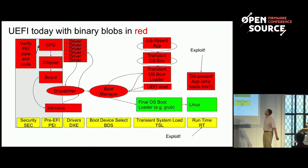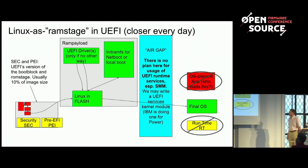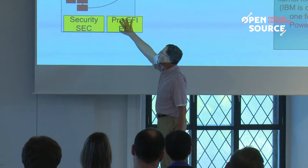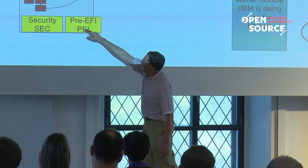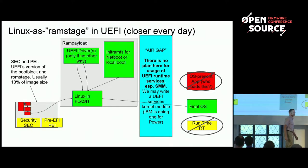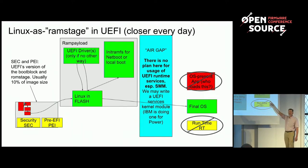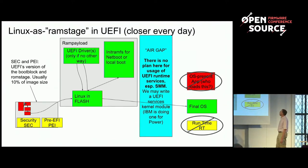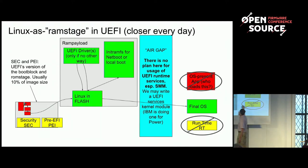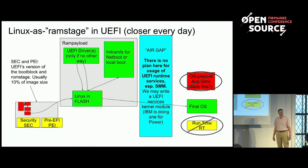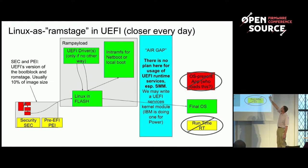The OS present app — what does that do? I don't know. There's just a lot of red stuff for me — blood red. This is what we're working toward. If we look at the SEC and PEI footprint in ROM, it's about 10%, and what we want to do is go right from that last step — the board init — right into Linux in flash, with an initramfs containing u-root with a netboot or localboot. The big red mess in the middle is gone completely. We're putting in this concept of an air gap — that thing loads that thing, and this thing never talks back. We don't trust firmware.